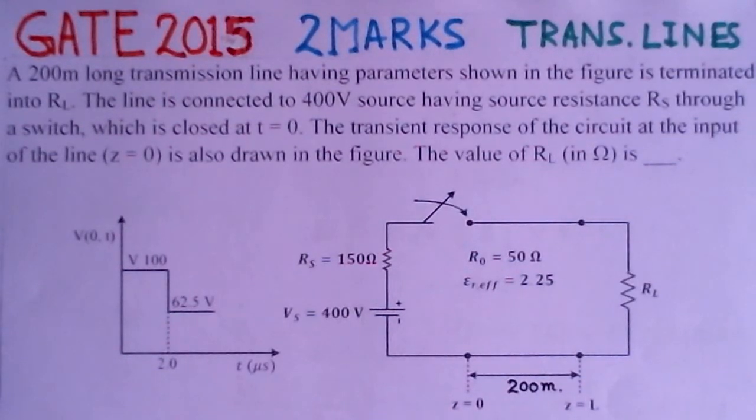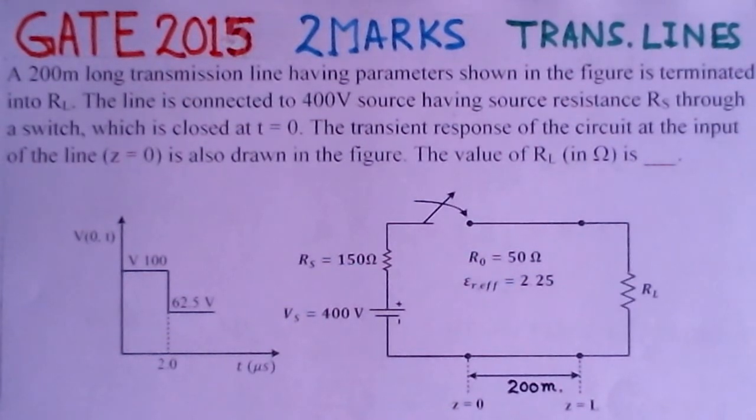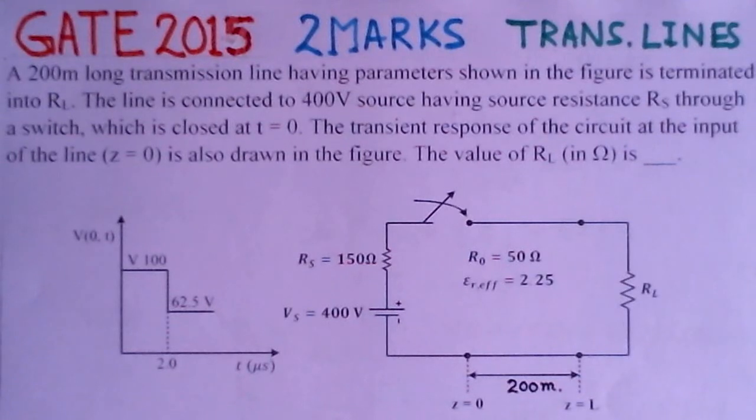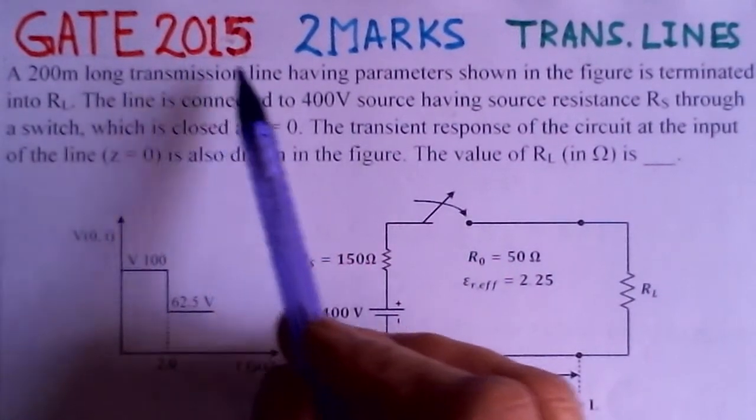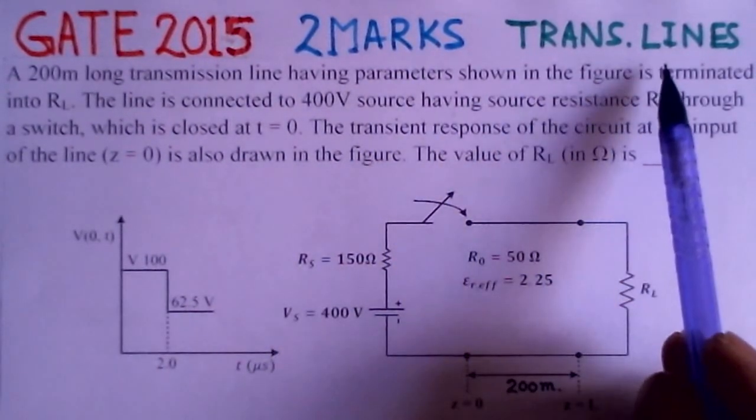For this analysis, the most convenient method is the bounce diagram to solve these problems. You can refer it to Google search and you would find there are some PDFs or PPTs available on the web where you can refer this. So now we will start with this problem. This is of GATE 2015, problem is of two marks on transmission lines.